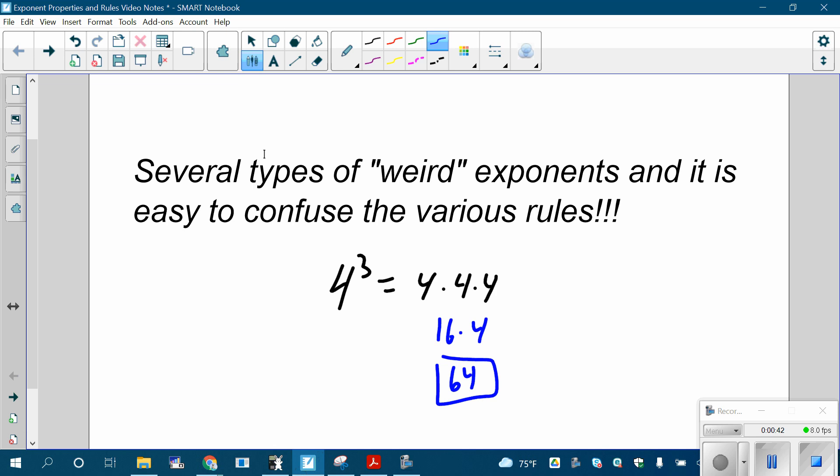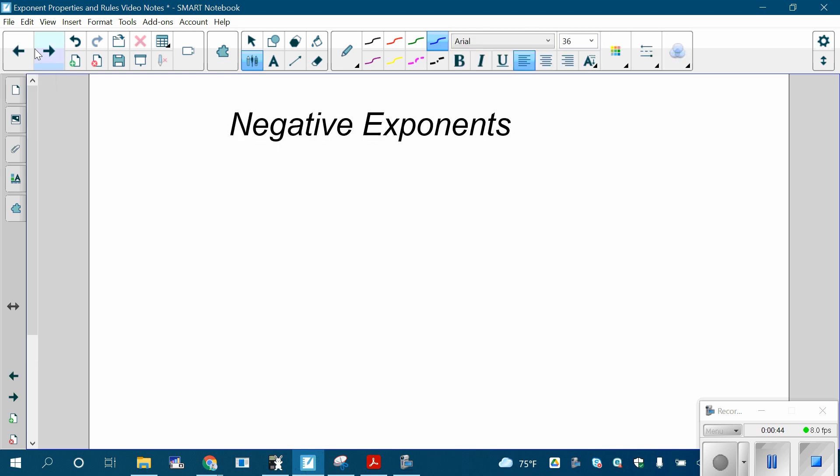Weird types of exponents: the first one is negative exponents. What's 2 to the negative third? Negative exponents don't make the result negative; that's not what they do. What they do is they turn it into a fraction. Essentially, they take whatever number has a negative exponent and they flip it. If it was in the numerator, it goes to the denominator. If it was in the denominator, it goes to the numerator.